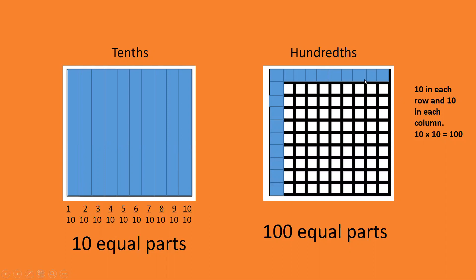With the hundredths, we've got ten in each row and ten in each column. So we know that ten times ten equals one hundred. So there's one hundred parts in total.